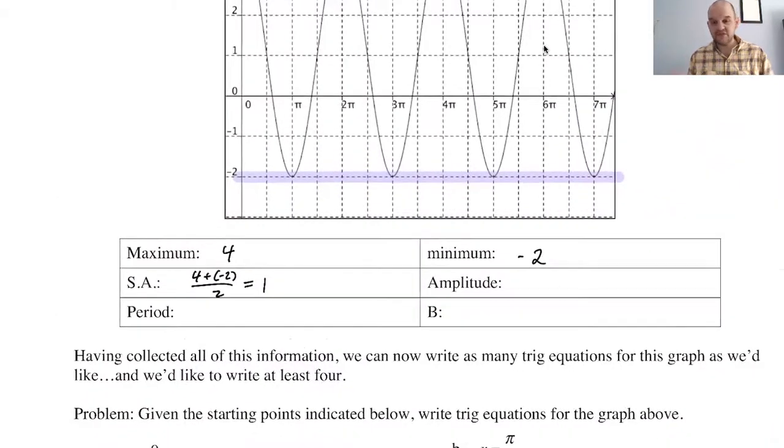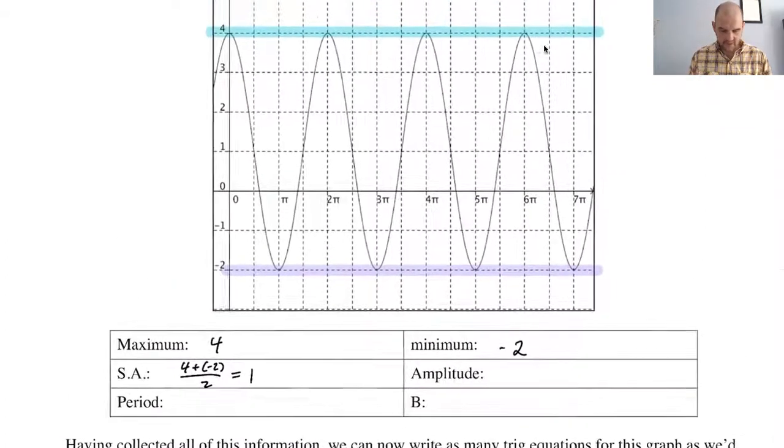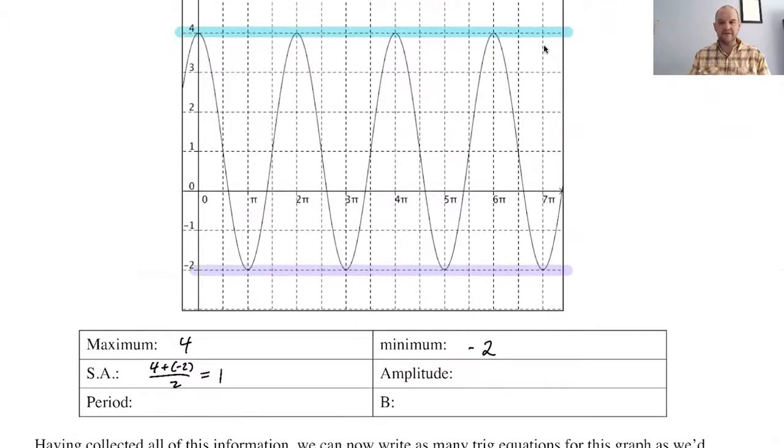Now amplitude, remember, is the absolute value of a. That's important because depending on what we're starting with, a might be positive or negative. So if you start at zero, start here, a is positive. Start here, a is negative because you're going to a minimum. Start here, a is negative. Start here, a is positive. So it just depends on what you're choosing.